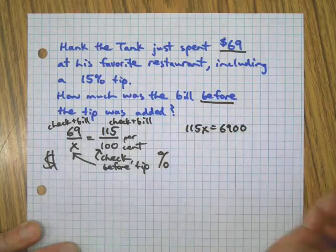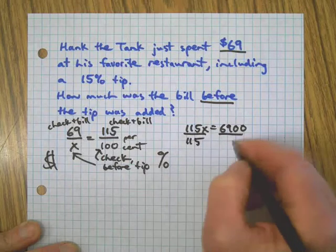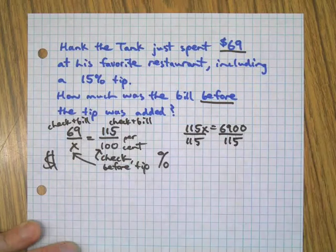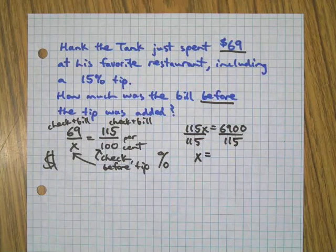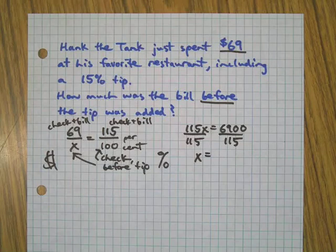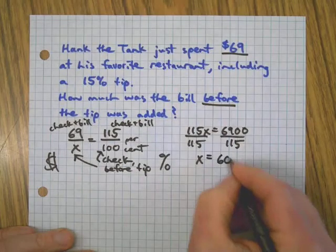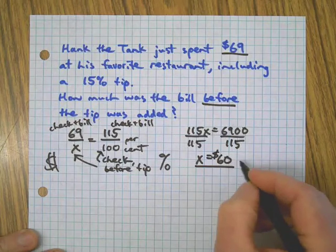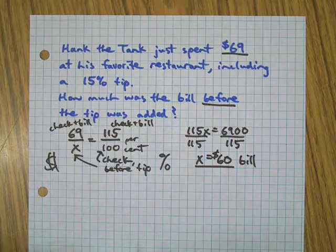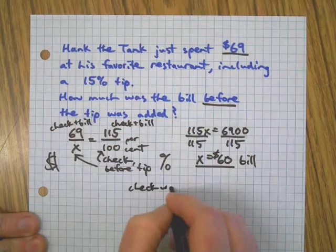I'm paying more than the bill was, and that's what the $69 is in this problem. So just understanding that from a critical thinking standpoint is key to this one. Now that's super easy. The math is super easy. Remember, this is the check plus the bill, just like this is over here. I'm going to make sure all this stuff matches. We have our dollars over here and our percent over here. And we cross multiply: 115x equals 69 times 100, which is 6900. We're going to divide by 115.